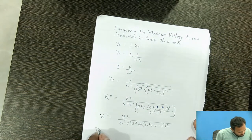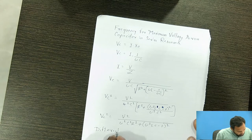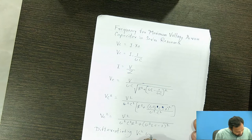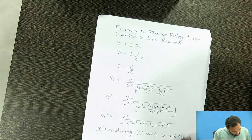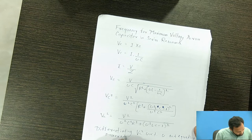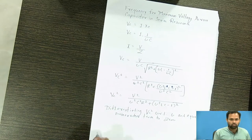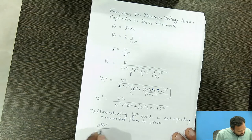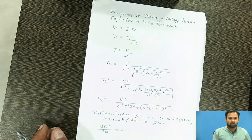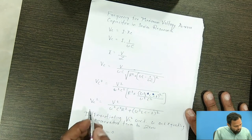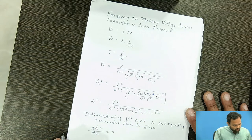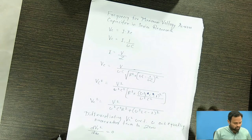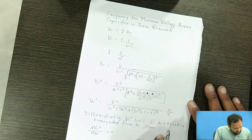Differentiating Vc squared with respect to omega and equating the numerator term to zero — that is, d(Vc²)/dω = 0 — this is what we have to do. Vc squared is equal to V squared upon omega squared C squared R squared plus omega squared LC minus 1, which is in the form u by v.